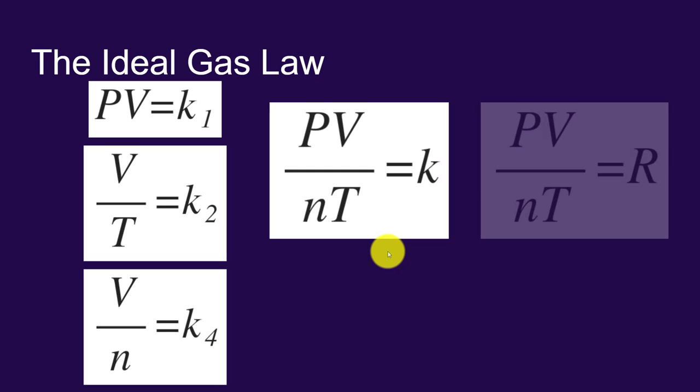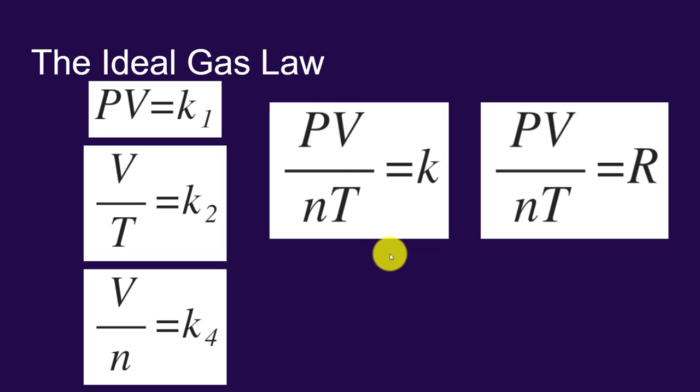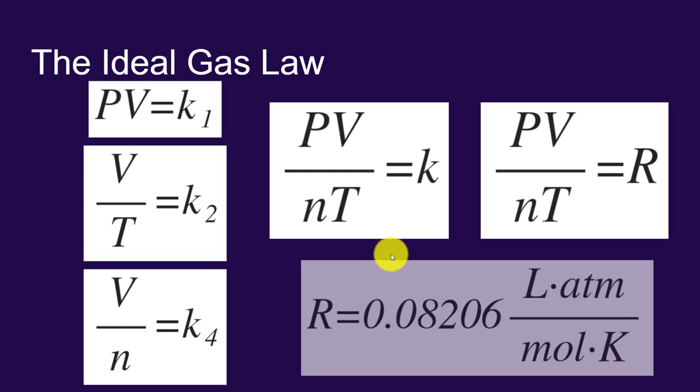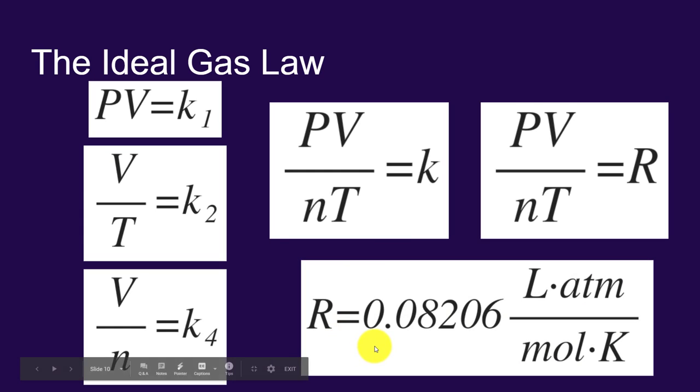So we assign that constant the letter R. And R refers to the ideal gas constant, or sometimes referred to as the universal gas constant. And R is equal to 0.08206. The book says 0.0821. I'm giving you an extra significant figure here. And R also has units. The units of R are liters times atmospheres divided by moles times Kelvin. That's a mouthful of units here, but you'll see shortly how those units come in handy.